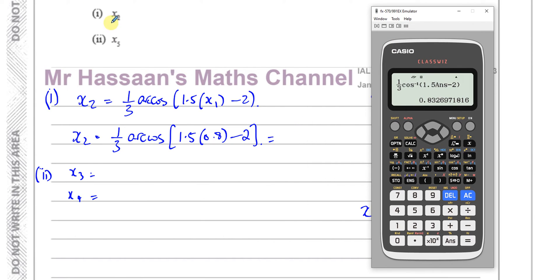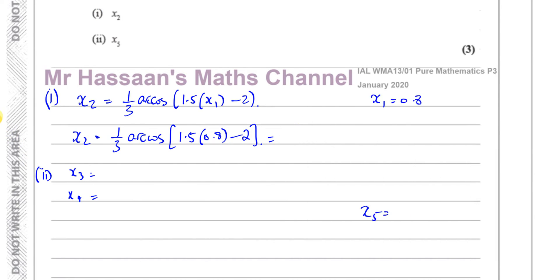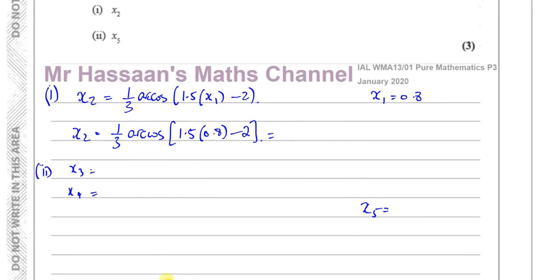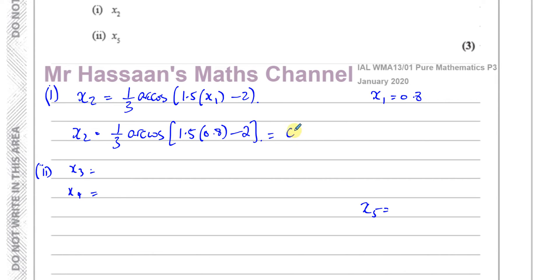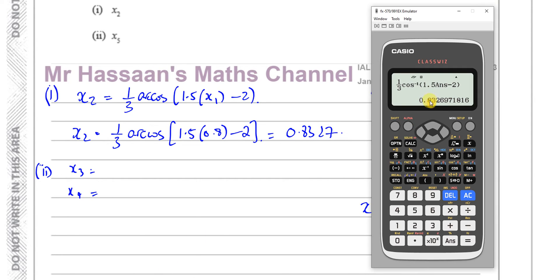All right, so I'm going to write down what x2 is, because they asked me to write it down, and I'm going to write it down to 4 decimal places. So this is going to be 0.8327. 0.8327. To 4 decimal places. 0.8327. 0.8327. Okay, just make sure again. 8327. That's right. So that's 4 decimal places for x2.